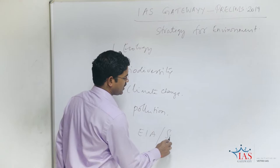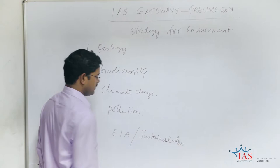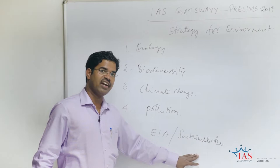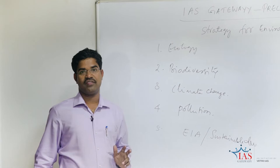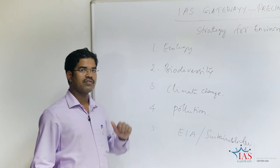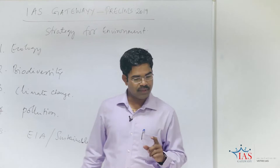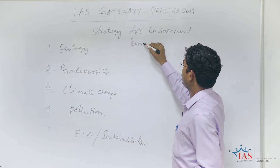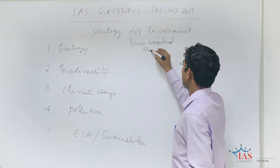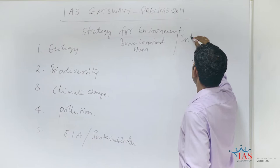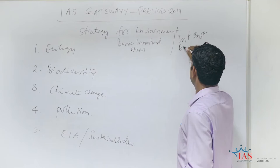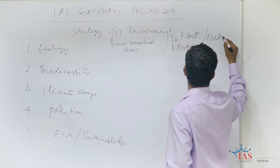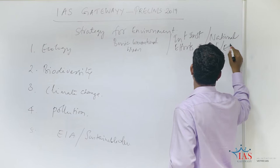These EIA and sustainable development are part of the mains examination; questions are not generally asked in these areas in the preliminary examination. These four chapters are very important. Among these four subjects, I want to divide the four chapters into three different parts so that our preparation becomes very simple. One is the basic conventional areas. Second is international institutions or efforts. Third is national institutions or efforts.